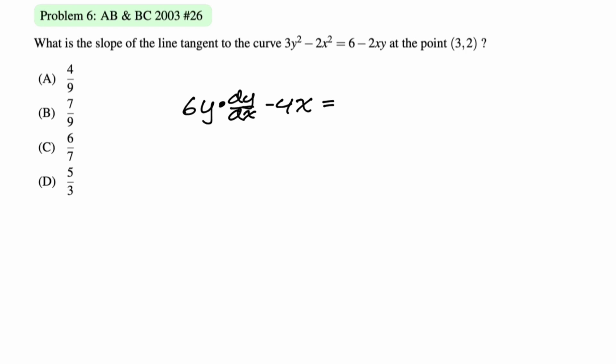First, the derivative of 3y squared is going to be 6y times, by the chain rule, dy dx. And then the derivative of negative 2x squared is just minus 4x. The derivative of 6 is 0. Now we've got to find the derivative of this product. I like to consider the first function, negative 2x, and the second function, y. So we're going to do first, negative 2x, times the derivative of the second, so dy dx, plus second, which is y, times derivative of the first, which is negative 2.